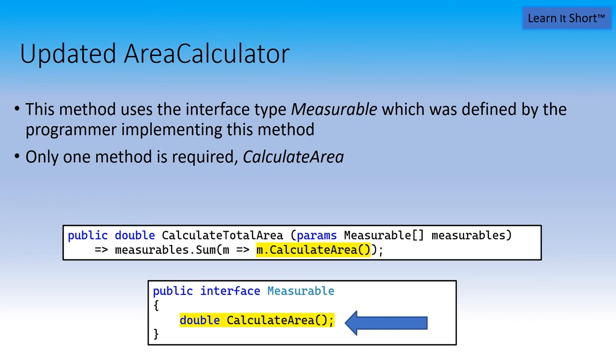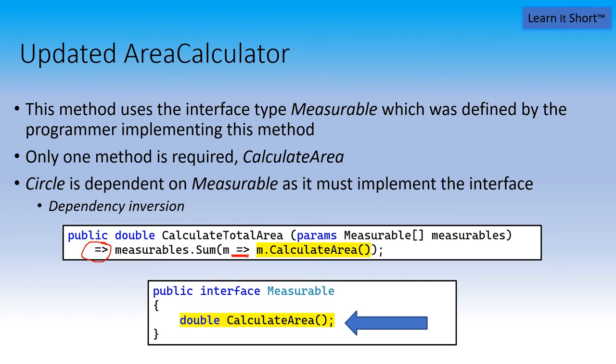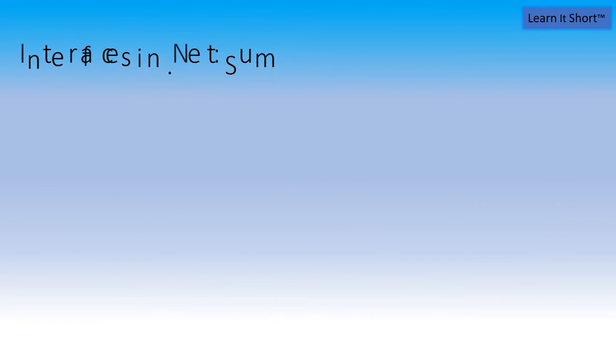We also did some fancy stuff here in this method with the new C sharp feature called expression methods, which allows us to avoid the curly braces and the return keyword for single line methods. The fat arrow here on the left is the introducer for the expression method. It looks like a lambda expression, but it's not. This is the lambda expression of the method that we're defining on the fly that we're passing into the method sum. So a little bit going on here with C sharp, but the point is that calculate total area defined its own interface. And that interface measurable is owned by the development team that also created the calculate total area method. So now we've inverted the dependency because circle is dependent on measurable as it has to mention measurable in its definition. And this is what we mean by dependency inversion.